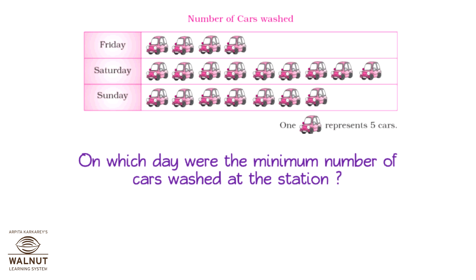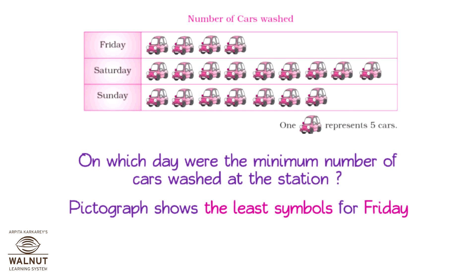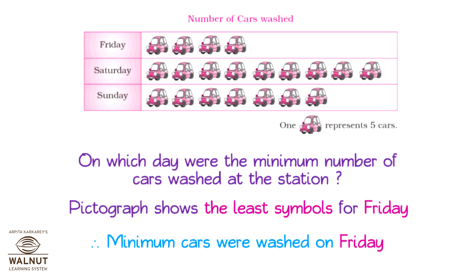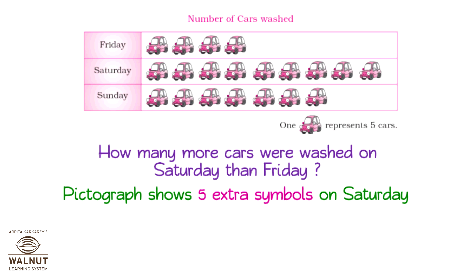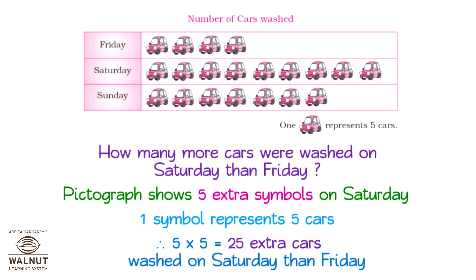On which day were the minimum number of cars washed? The pictograph shows the least number of symbols for Friday, therefore minimum cars were washed on Friday. How many more cars were washed on Saturday than Friday? The pictograph shows five extra symbols on Saturday, and one symbol represents five cars, so five into five is equal to twenty-five extra cars washed on Saturday than Friday.